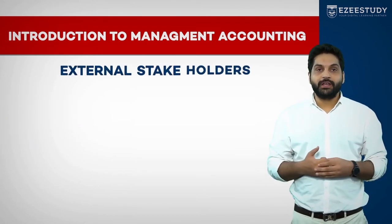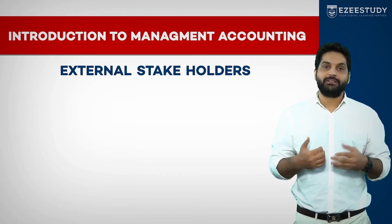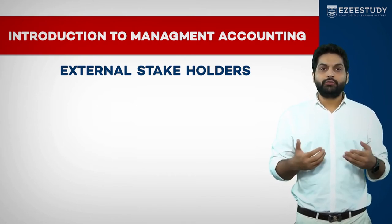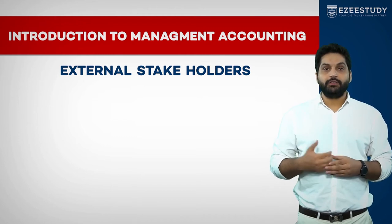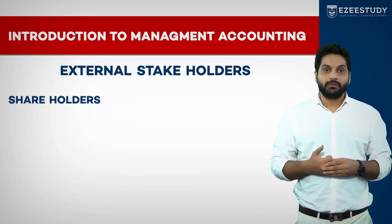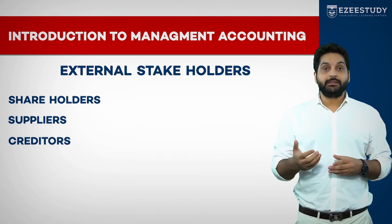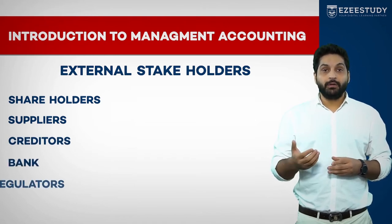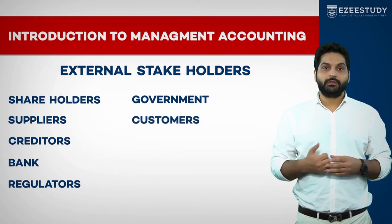External stakeholders are those who are outside the organization — usually financial stakeholders — like shareholders, suppliers, creditors, banks, regulators, government, and customers.